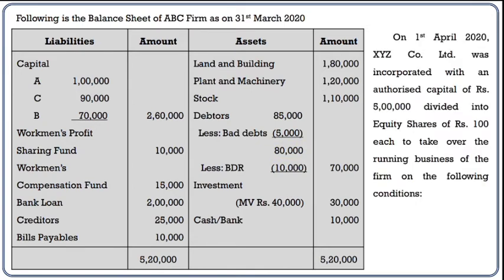On 1st April 2020, XYZ Company Limited was incorporated with an authorized capital of Rs. 5 lakh, divided into equity shares of Rs. 100 each, to take over the running business of the firm on the following conditions. So we have 5000 equity shares of Rs. 100 each as authorized capital.